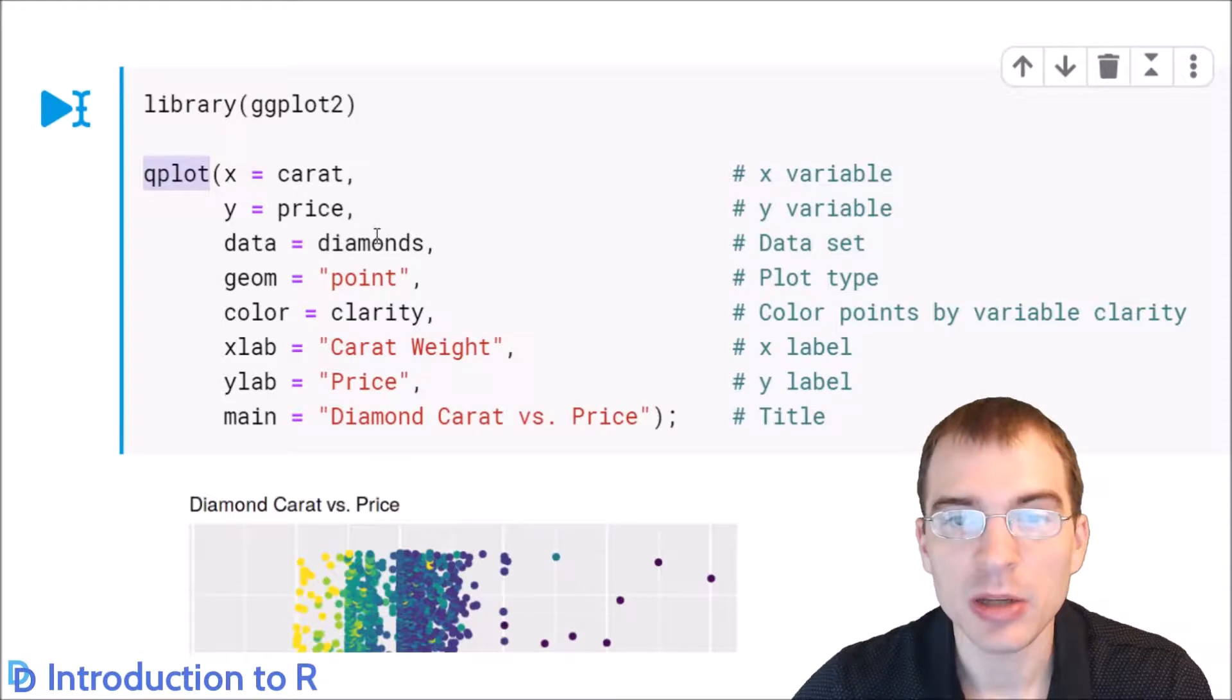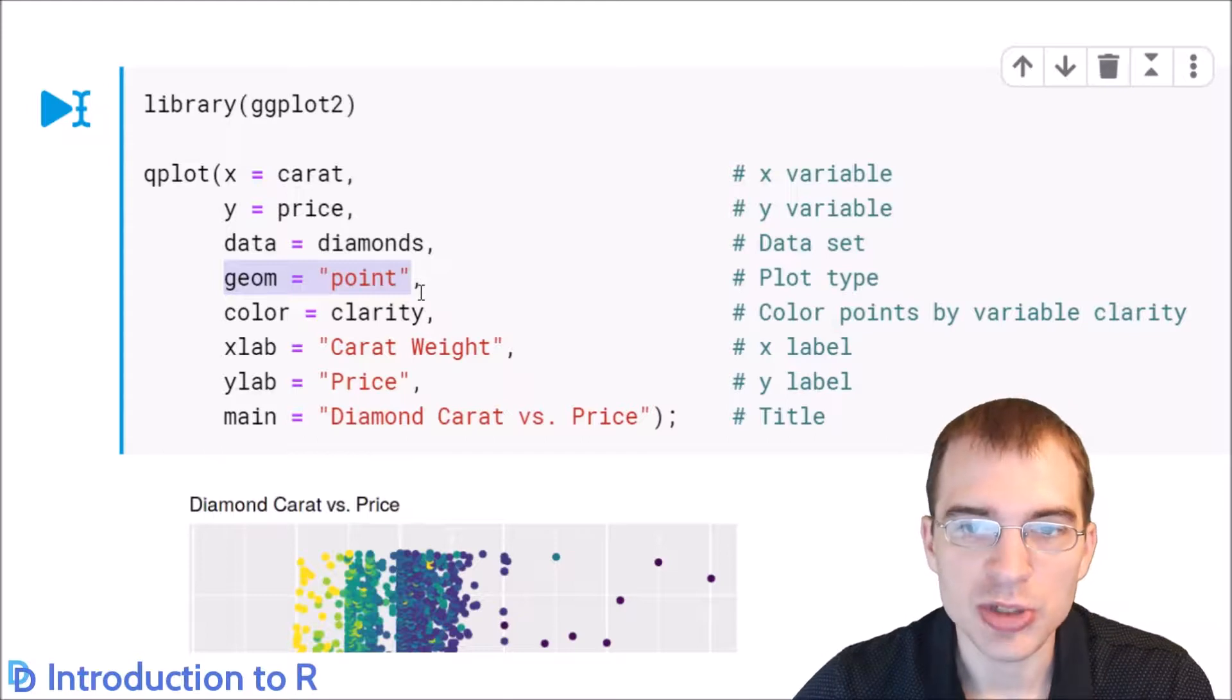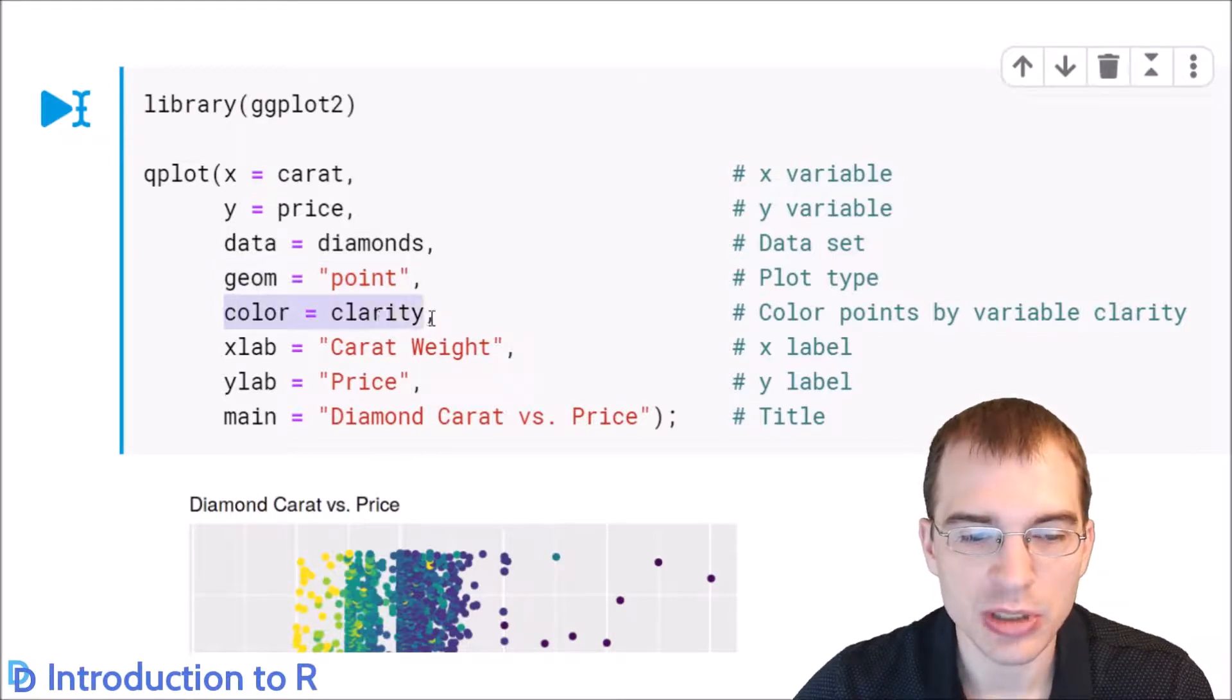We pass in the variables that we want to plot to the x and y arguments. The data is the diamonds dataset. We're going to set the geom to point. In ggplot2, the word geom means geometry, which essentially defines the type of plot you're creating. Geom point means a scatter plot. We're going to set the color to the diamond clarity. So this is a third variable entering on the color, because we're already plotting carat on x and price on y.